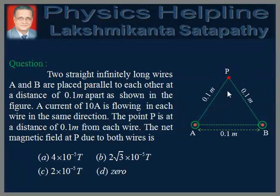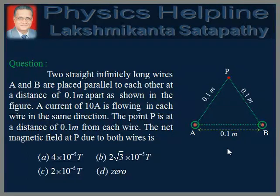P is a given point at which we will determine the magnetic field due to the two wires. It is given that PA is equal to PB, which is equal to 0.1 meters.